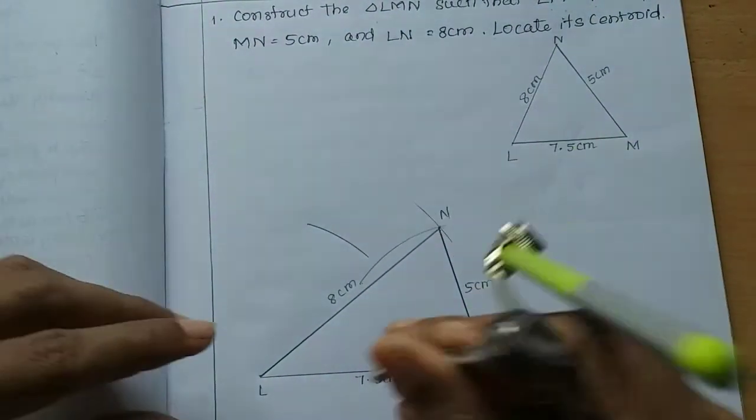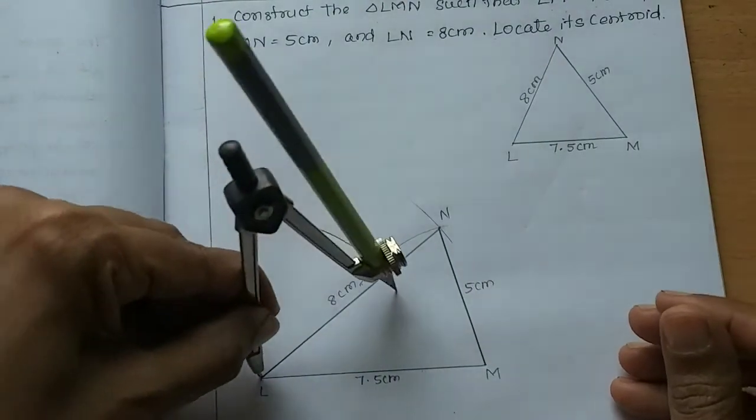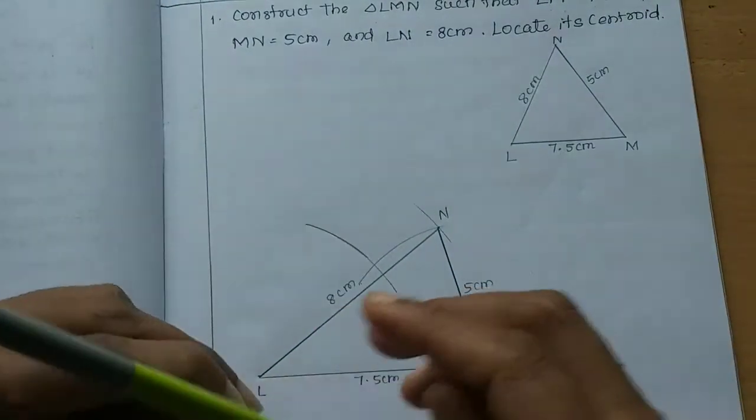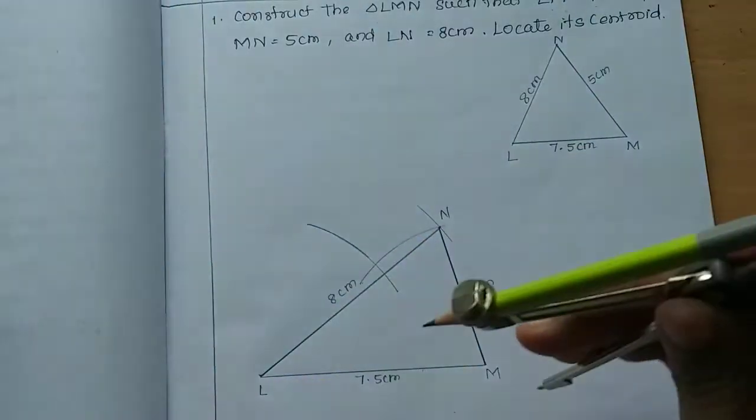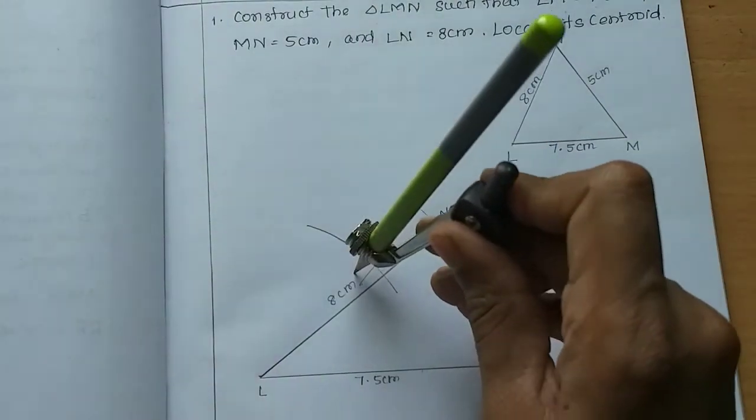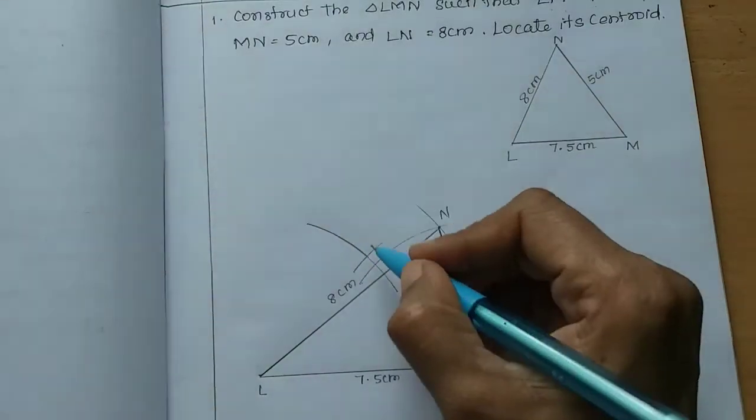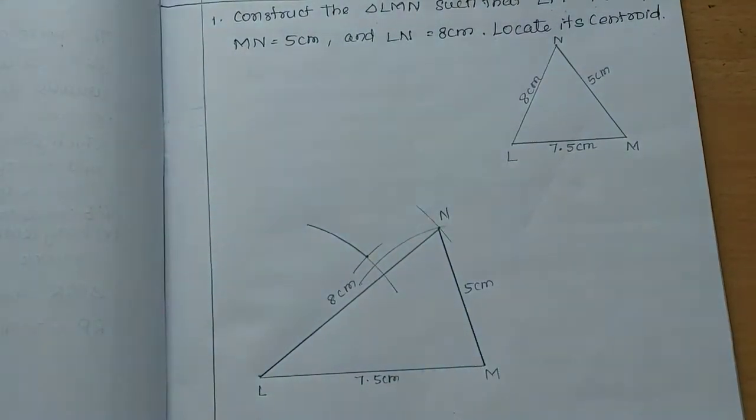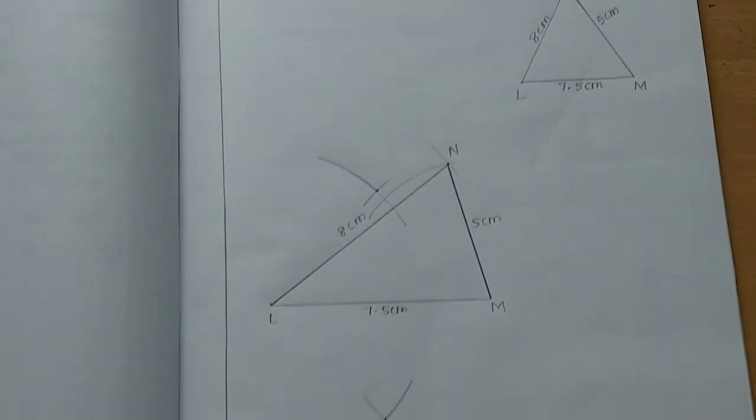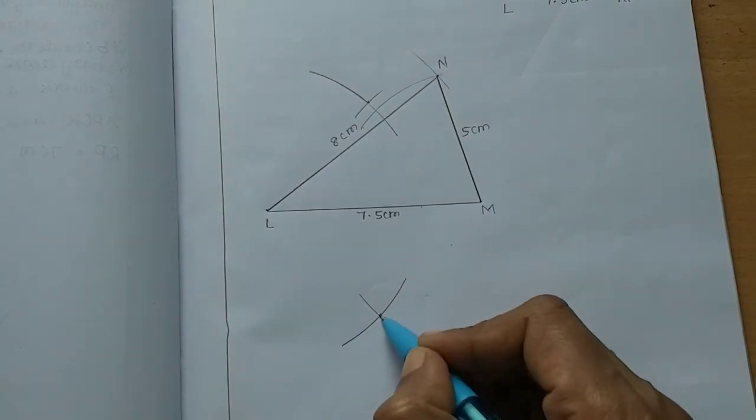See, actually, we need to cut the arc. We need to cut the arc. If we cut the arc, we don't get confused. Okay? Correct. Now, the two arcs are made. This is the middle arc. Sorry. There is this.